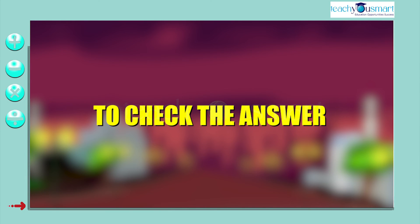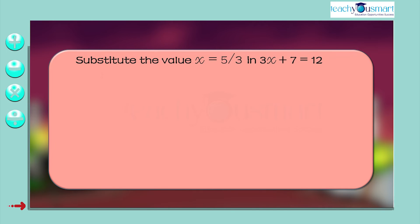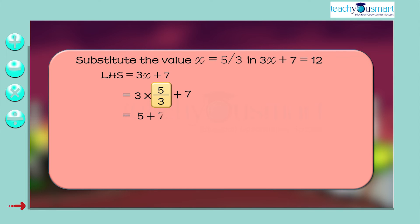To check the answer, substitute x = 5/3 in 3x + 7 = 12. LHS = 3 × (5/3) + 7 = 5 + 7 = 12, which equals RHS.